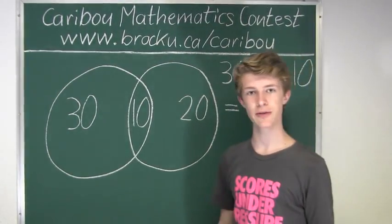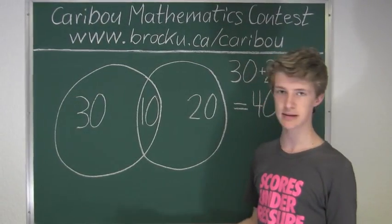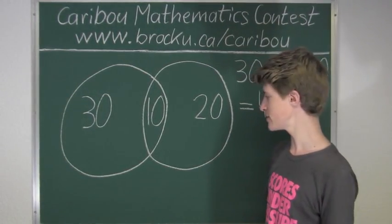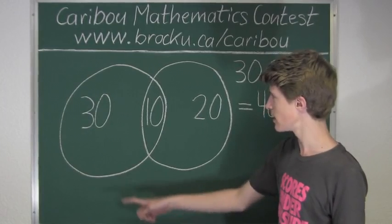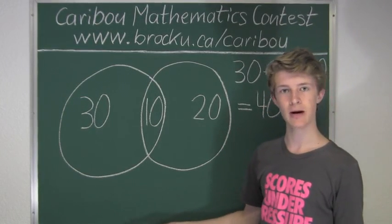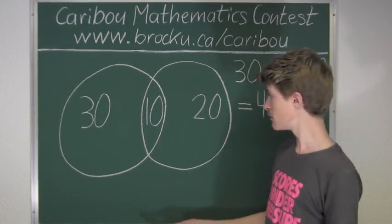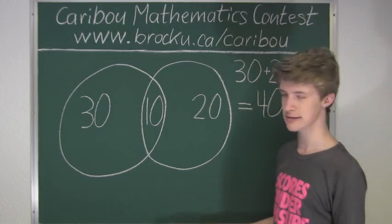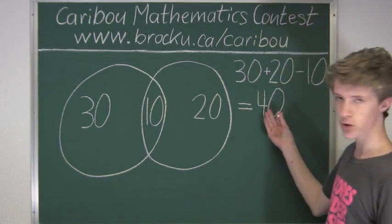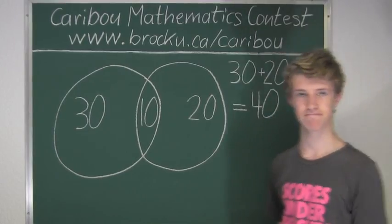There may be some numbers that are not divisible by 6 and not divisible by 7, so they would be somewhere outside this Venn diagram. But since we want only the minimum number of balls possible in the basket, we will use the number 40. Therefore, the minimum must be 40.